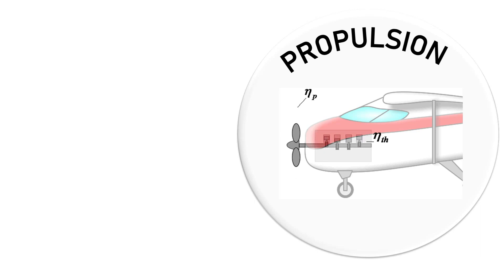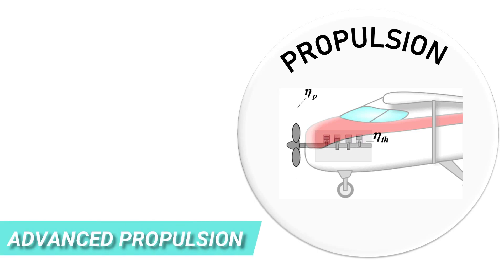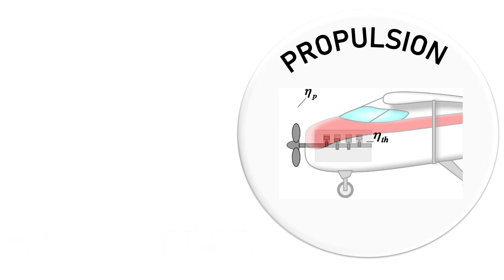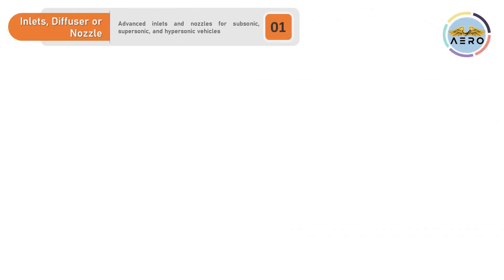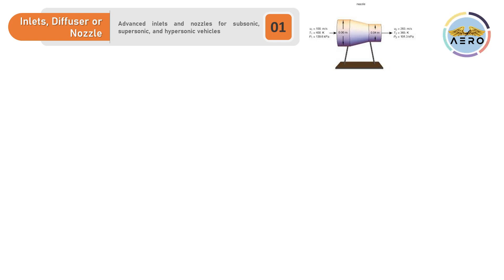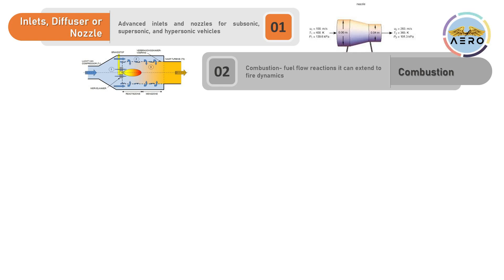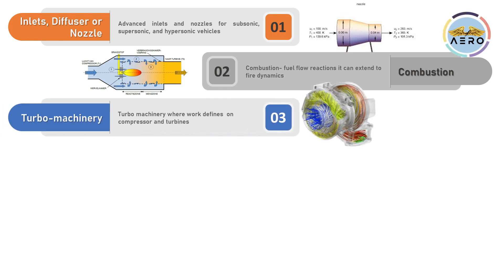Next is the propulsion research topic, sometimes also called thermal and propulsion core. In air-breathing propulsion, you can work on inlets, diffusers, or nozzles for various flight speeds — including advanced inlets and nozzles for subsonic, supersonic, and hypersonic vehicles. You can also work on combustion, fuel flow reactions, fire dynamics, and turbomachinery including compressors and turbines.